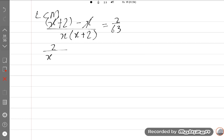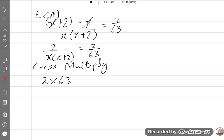Now 2 upon X into X plus 2 equals 2 upon 63. So cross multiply: 2 multiplied by 63 is equal to 2 multiplied by X into X plus 2.